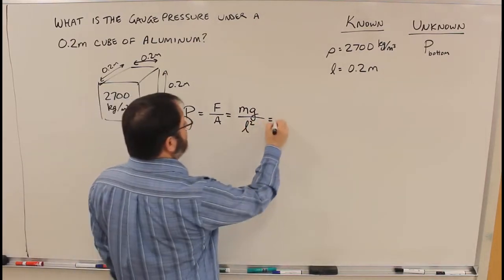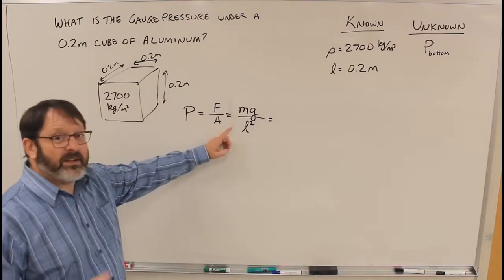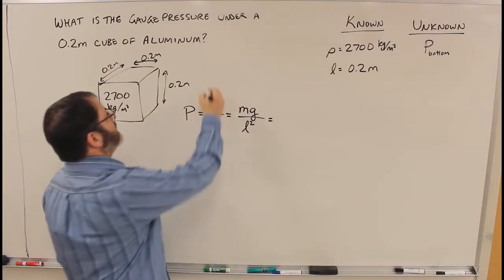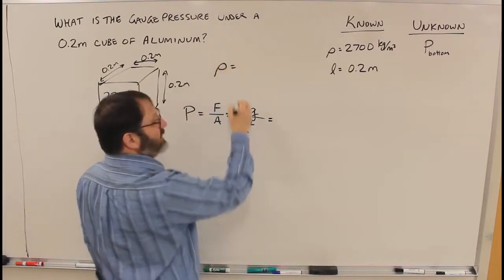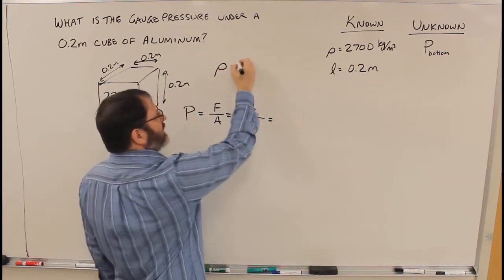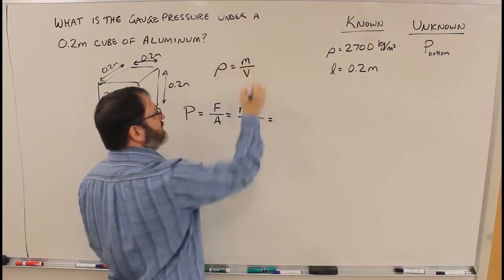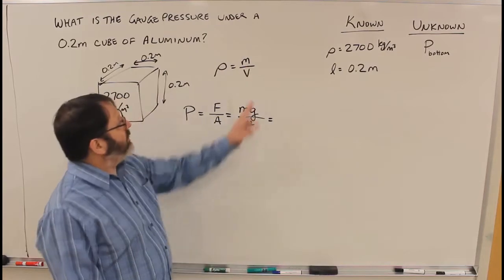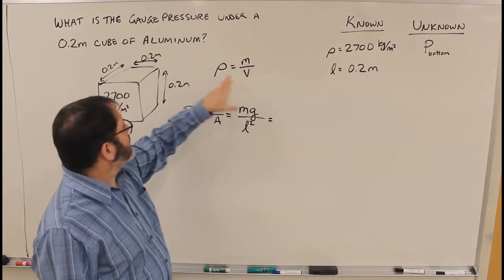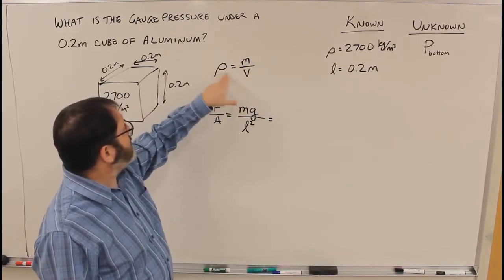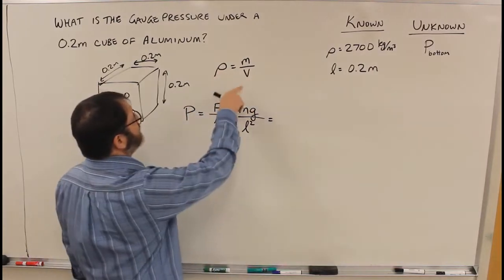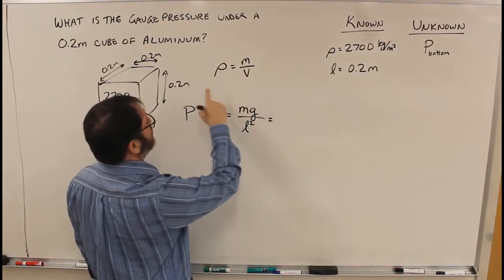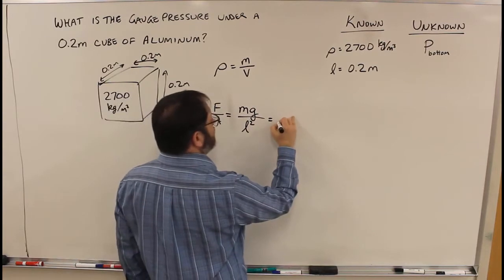Alright, so what is the mass? We aren't given the mass, we're given the density. So now we have to know that the density is mass per volume. We don't know the mass, we do know the density, and we can figure out the volume. So the mass is actually, if I rearrange this, rho times V.